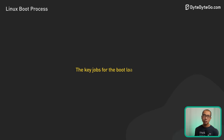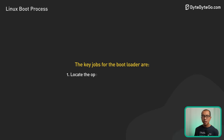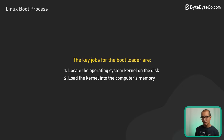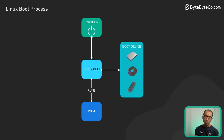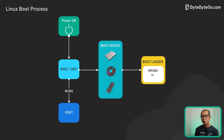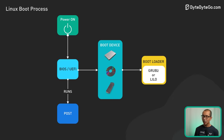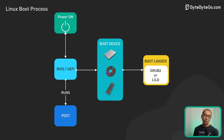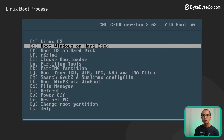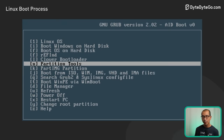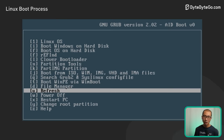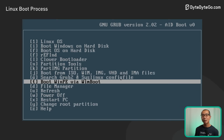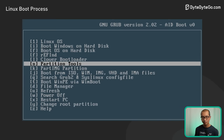The key jobs for bootloaders are: locate the operating system kernel on the disk, load the kernel into the computer's memory, and start running the kernel code. Some common bootloaders are Lilo and Grub2. Lilo, or the Linux Loader, is pretty outdated and rarely used in modern distributions. Grub2 is the most full-featured and widely used today — it can handle booting multiple operating systems, offers graphical or text-based menus, and has advanced options for power users.